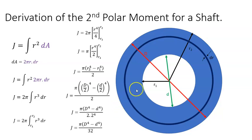If the shaft was a solid shaft, then small d would be 0, so the equation reduces to πD⁴/32. That's the equation for the second polar moment of a solid shaft.